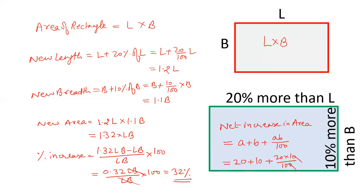When you cancel out this, you get 20 plus 10 is 30 plus 2 is 32 percent increase.